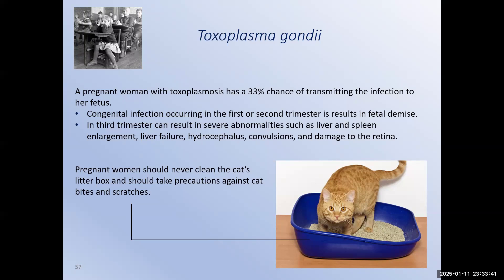If a woman is pregnant, the protozoa can cross the placenta to infect the developing fetus. If this happens in the first or second trimester, fetal demise is usually the result. In the second to third trimester, severe neurological damage can be done to the developing child. So women who are pregnant should be extremely careful about handling cats, and they certainly should avoid handling feral cats or cleaning litter boxes.